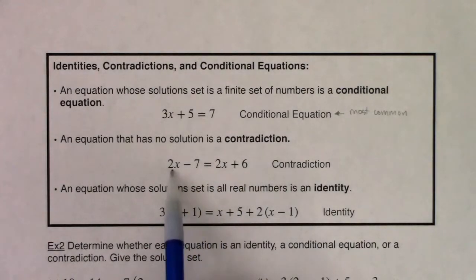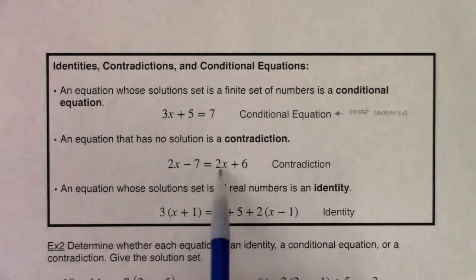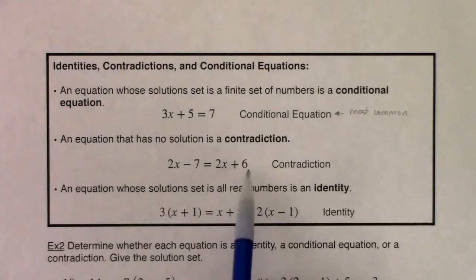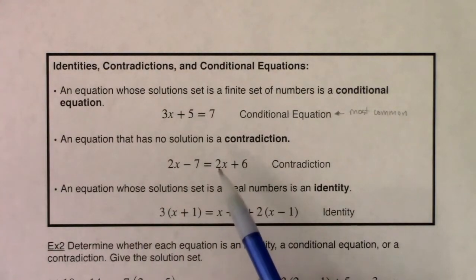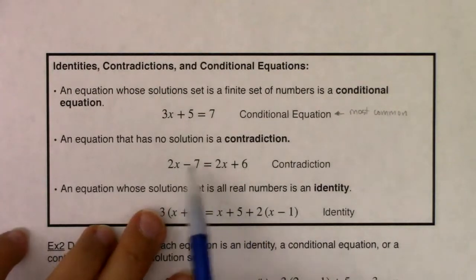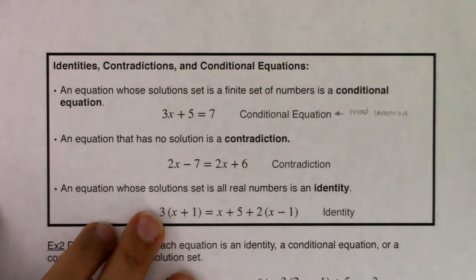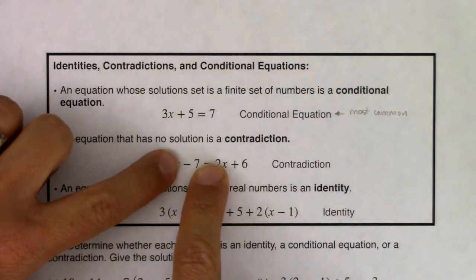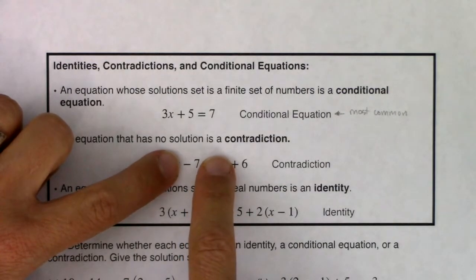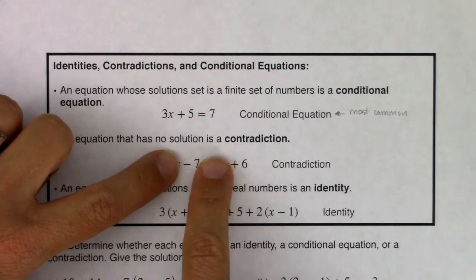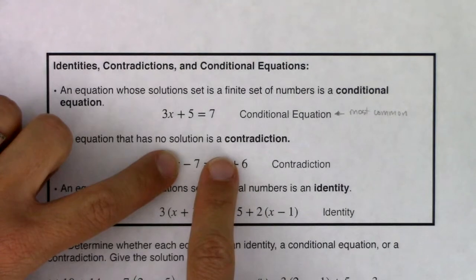An equation that has no solution is called a contradiction. Here's an example: 2x - 7 = 2x + 6. There is no way for this equation to be true — pick any value of x you want: 0, 1, negative 7, pi — there's no value of x that makes it work. When you subtract 2x from both sides, you get negative 7 = 6. That is a contradiction; negative 7 will never equal 6.